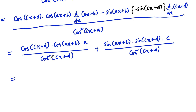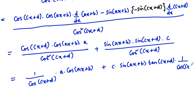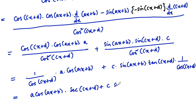So cos(cx + d) upon cos squared gives 1 upon cos(cx + d), into a into cos(ax + b). Plus c times sin(ax + b), and sin(cx + d) upon cos(cx + d) we can write as tan(cx + d), into 1 upon cos(cx + d) which is secant. So we get: a·cos(ax + b)·sec(cx + d) plus c·sin(ax + b)·tan(cx + d)·sec(cx + d).